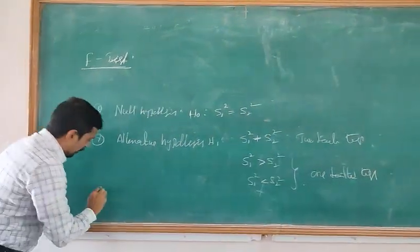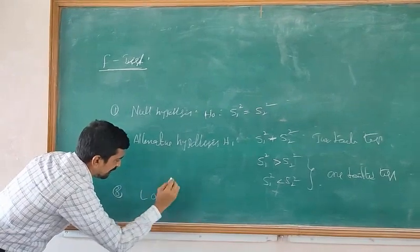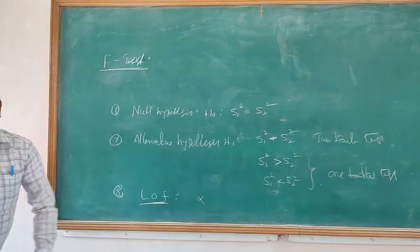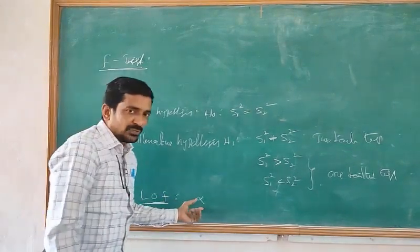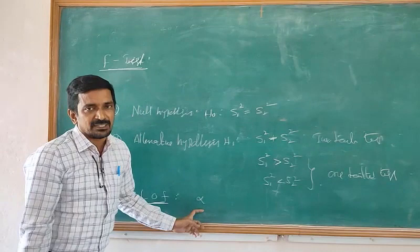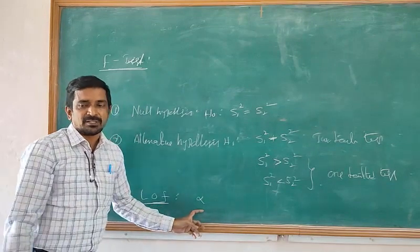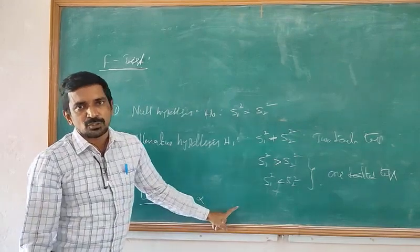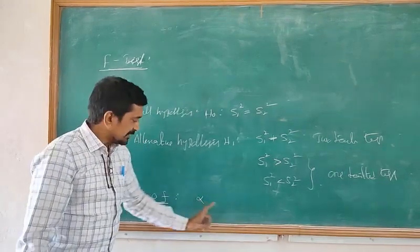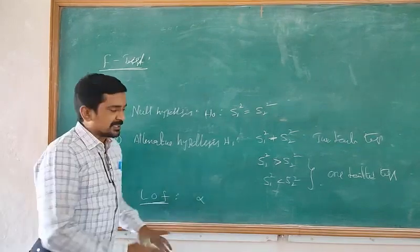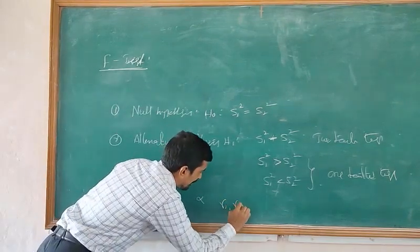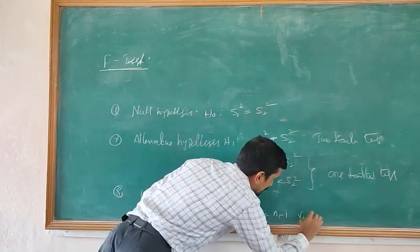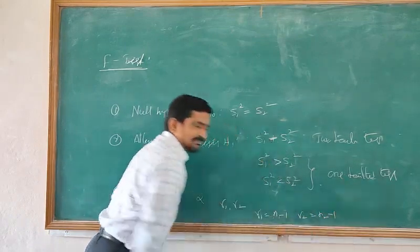The third step is to find the level of significance, denoted as alpha. We identify the alpha value at 5%, 1%, or 0.1% level. The table value is found at alpha under the degrees of freedom mu1 and mu2, where mu1 equals N1 minus 1 and mu2 equals N2 minus 1.